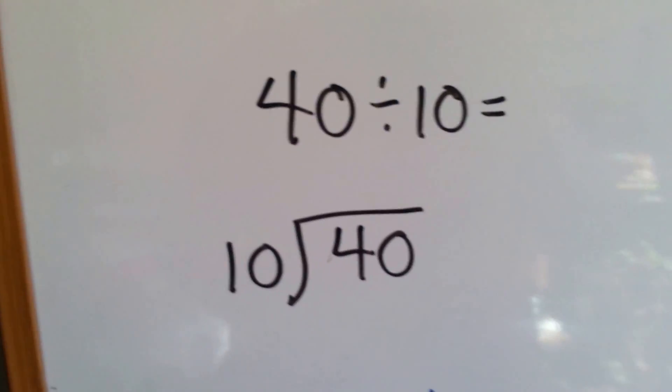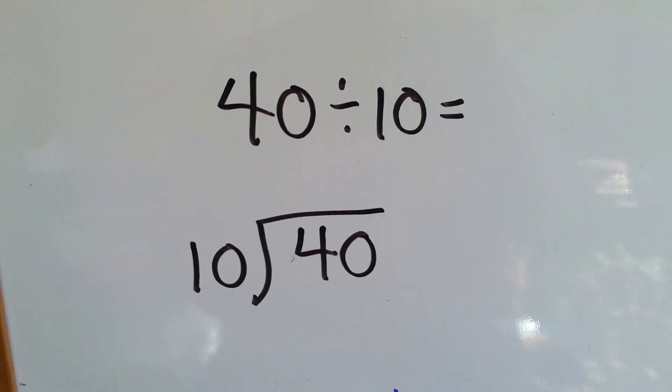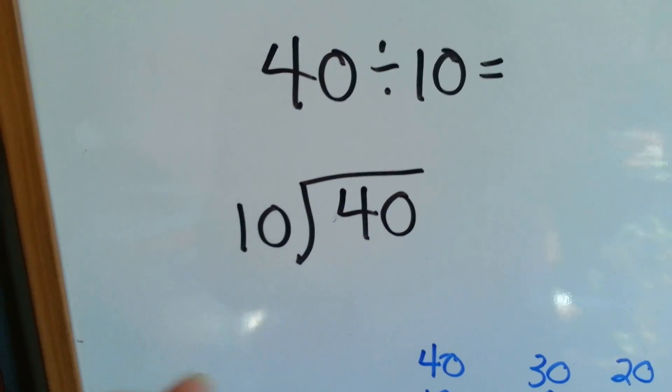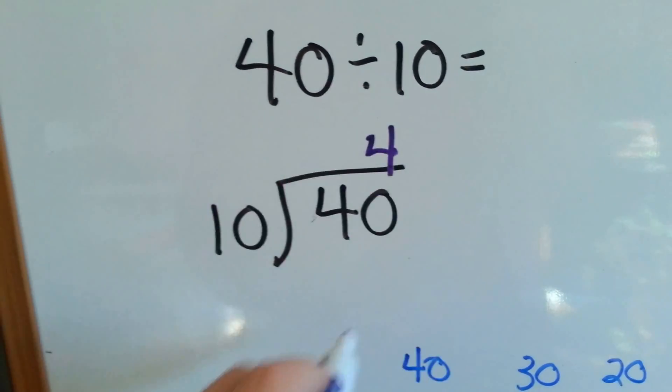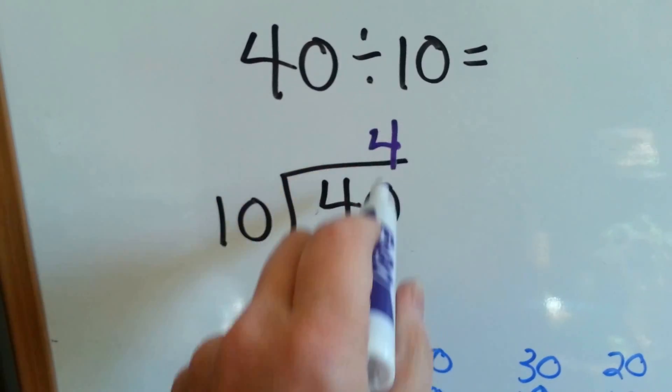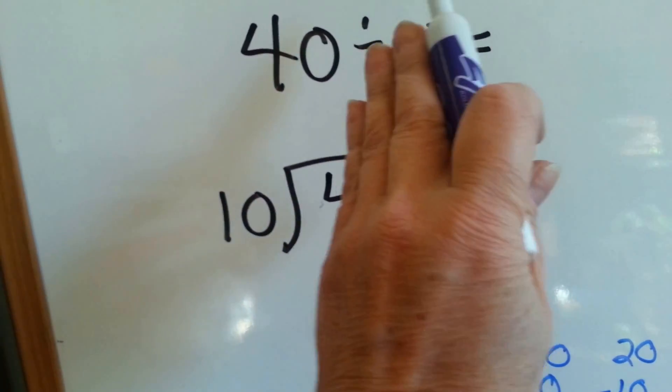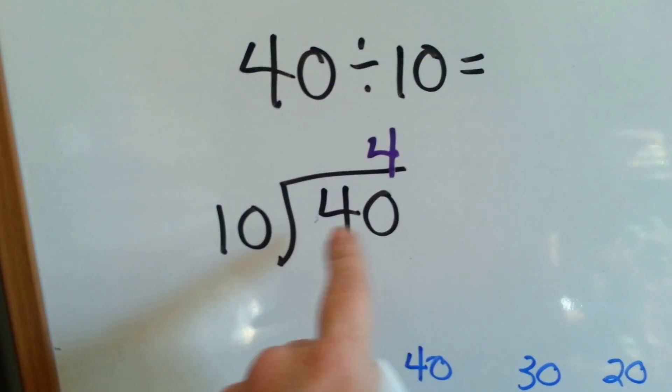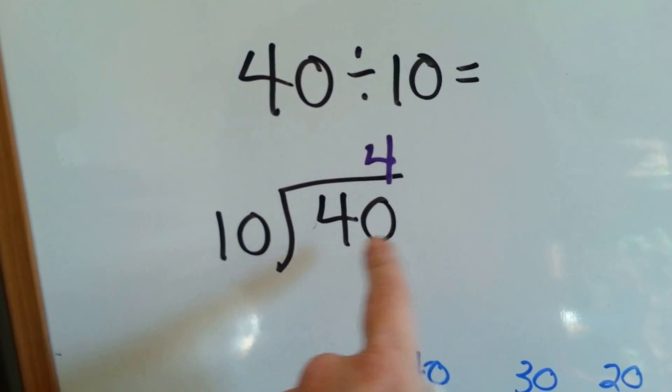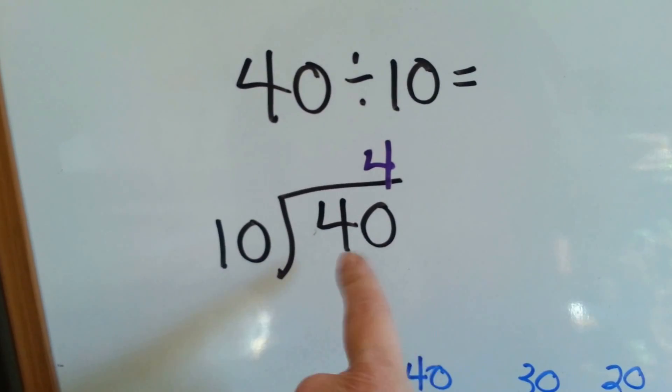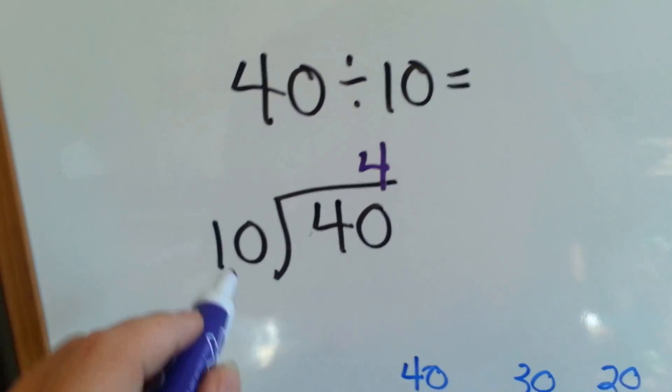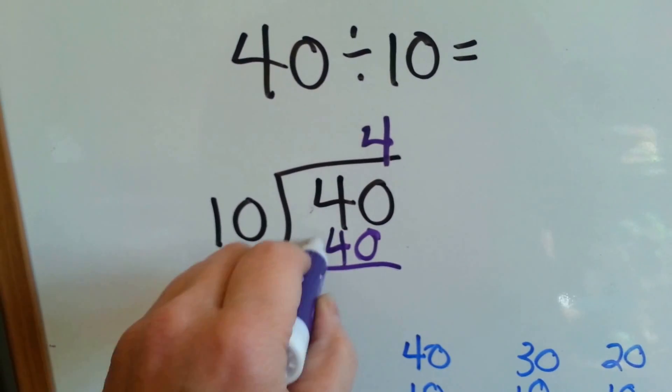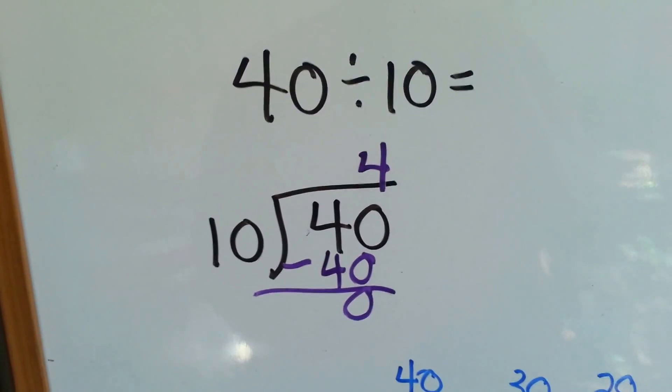Let's try this one. 40 divided by 10. Let's count by tens on our fingers. 10, 20, 30, 40. 4. Again, I put the 4 above the 0, because we're not saying how many times can 10 fit into 4. We're saying it fits into 40. And that lets everyone know that the 10 went into the entire 40, not just the 4. Now we need to multiply 10 times 4 is 40. We do our subtraction, get 0, and we're done with that one.